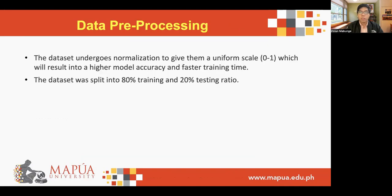As part of the data pre-processing, the dataset undergoes normalization to give it a uniform scale, which results in higher model accuracy and faster training time. The dataset was then split into an 80% training and 20% testing ratio, where 80% is utilized for the training of the model and 20% is used for the testing of the developed model.